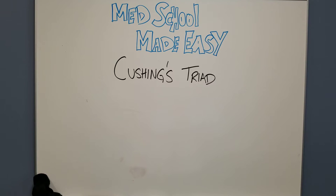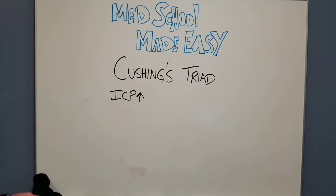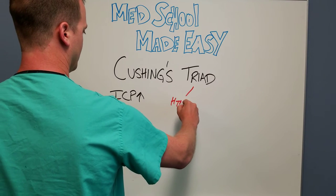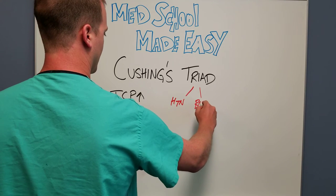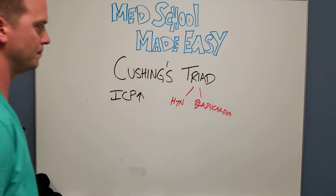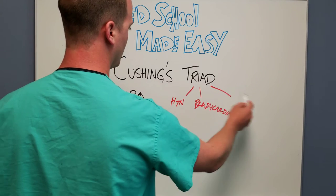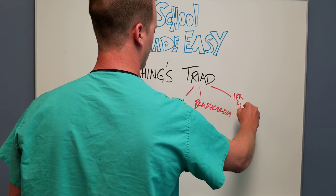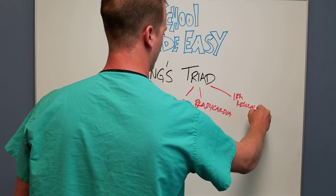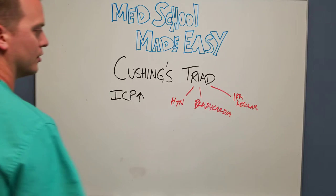Cushing's reflex is an interesting phenomenon that occurs when you have increased intracranial pressure. So ICP goes up — you have a head injury, a head bleed, something like that — and it causes this unusual triad: hypertension and bradycardia, which is interesting because usually we don't see those together, and it's almost paradoxical. The third component is irregular respirations.